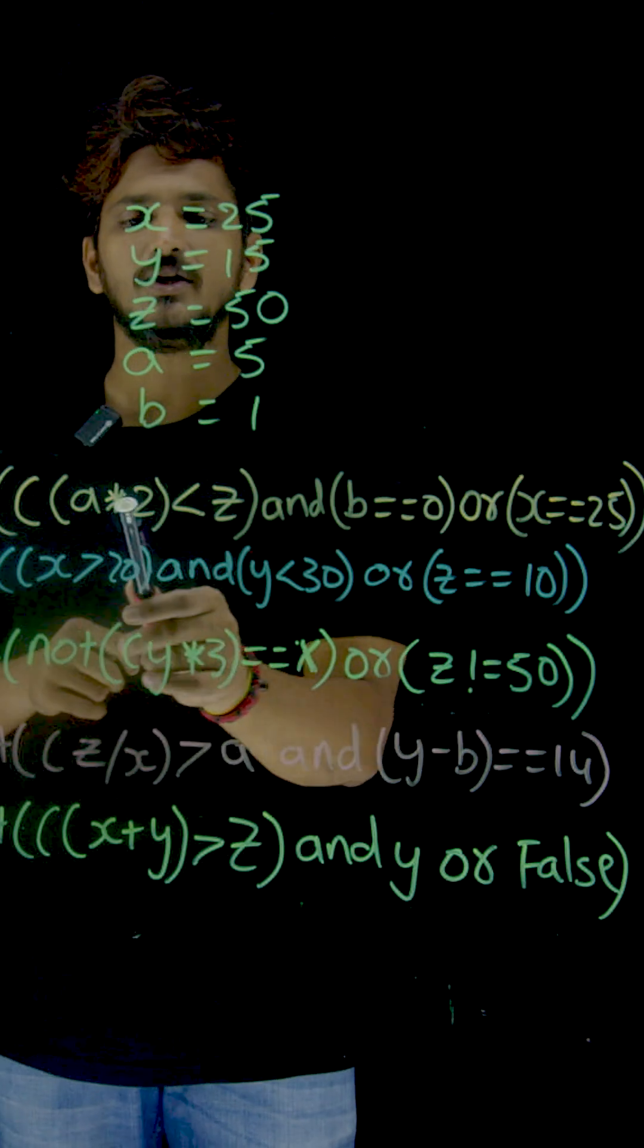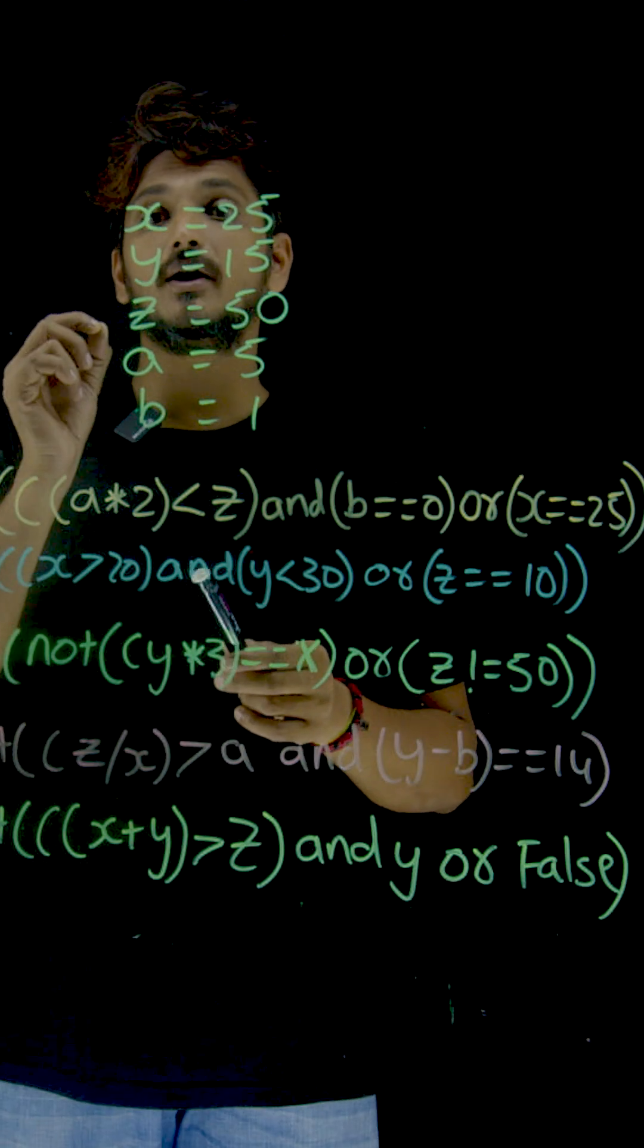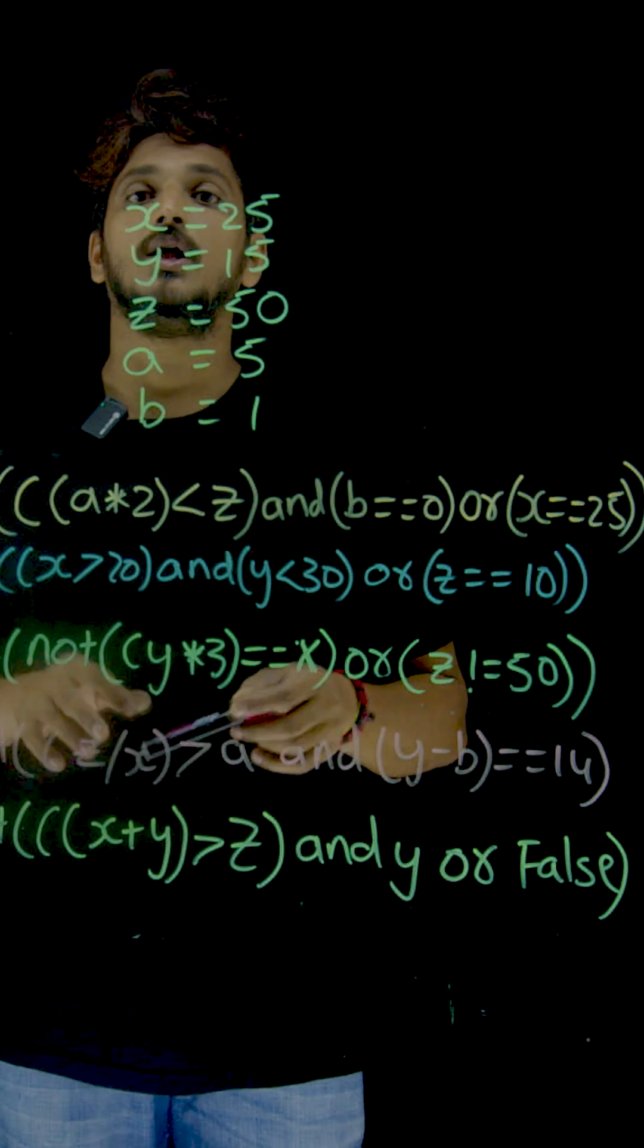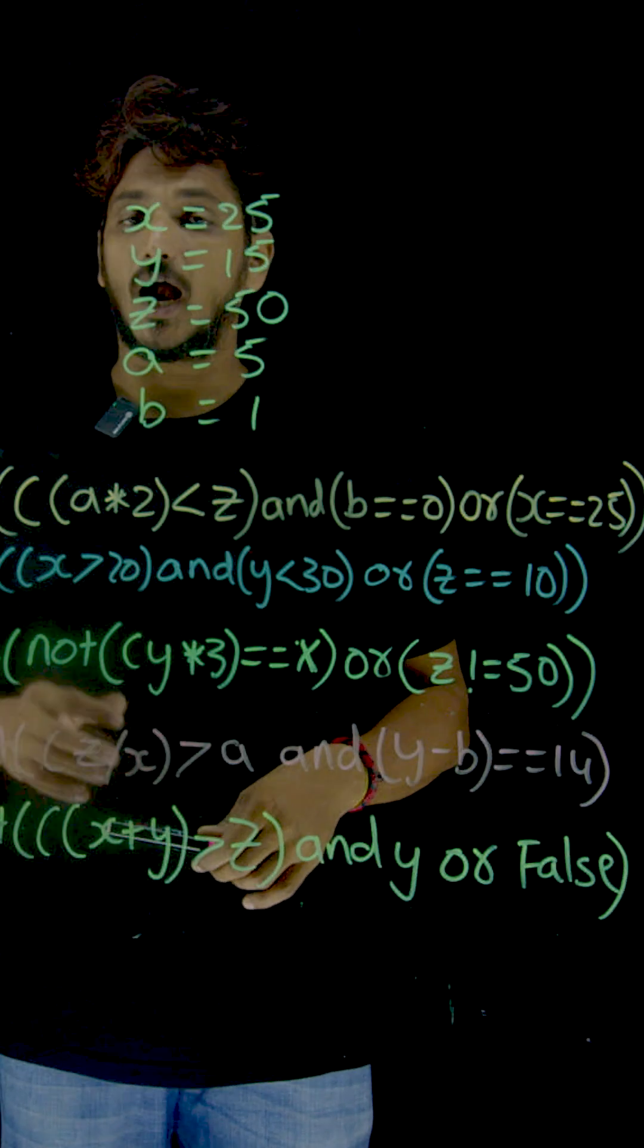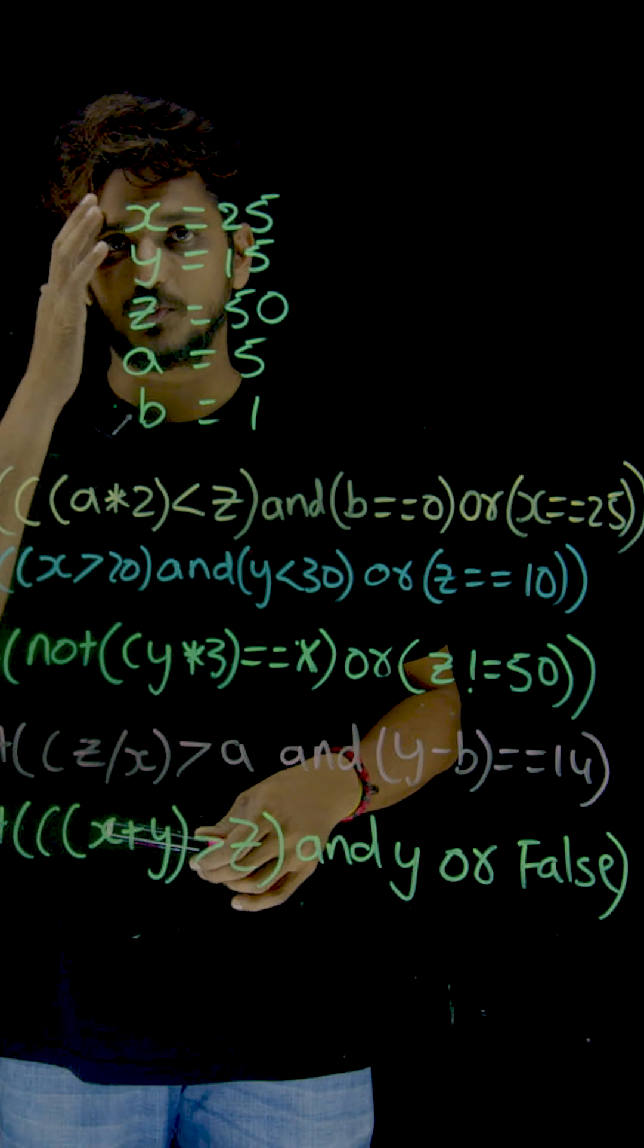So finally, this print statement is going to display true value. Like that, you keep analyzing the remaining print statements and put it in the comment what the output is.